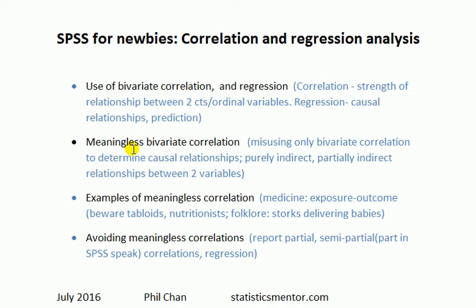Next: meaningless bivariate correlation. Many correlations don't actually mean anything. The reason is that people use bivariate correlation to try to determine causal relationships — but as we just said, we use regression for that. This stems from the fact that the relationship between two variables could be indirect or partially indirect, as we'll see in some examples.